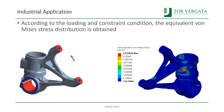Here you can see the shape of the part considered, the boundary conditions — the load during braking and the constraints — and the original stress distribution map.